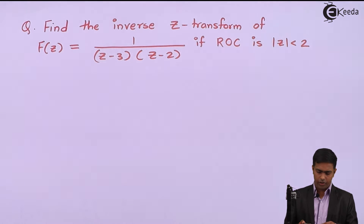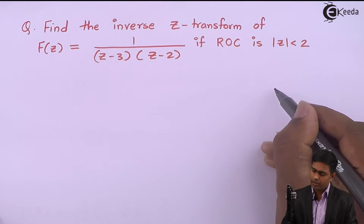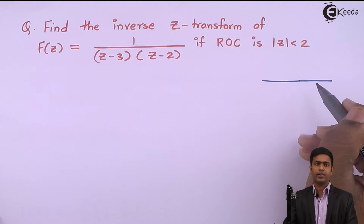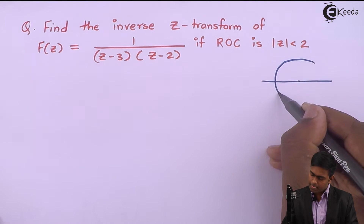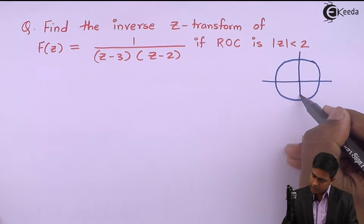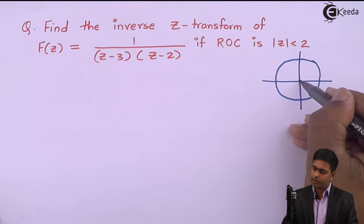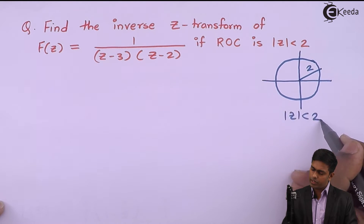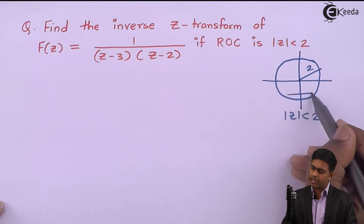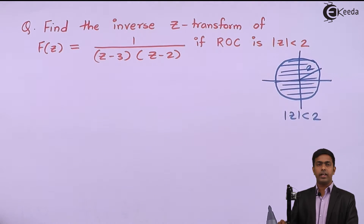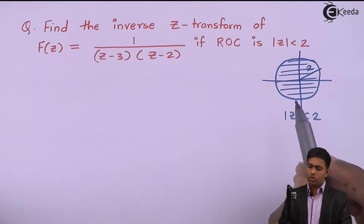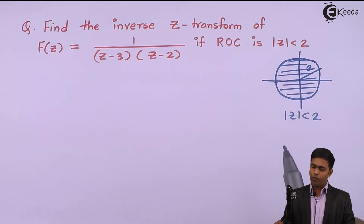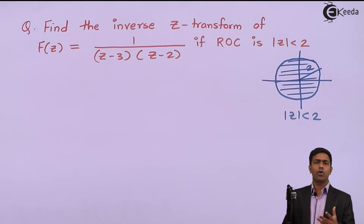To understand this region we will draw it. We know that |z| = a is a circle with center at the origin and radius equal to a. Here we draw a circle with radius equal to 2, so a = 2. The region |z| < 2 is the area inside this circle, because inside the circle the radius is less than 2. In this area we get the set of values of z for which the z-transform is convergent.